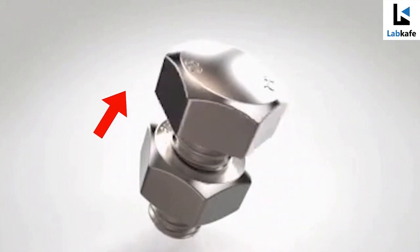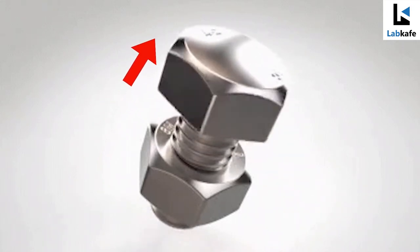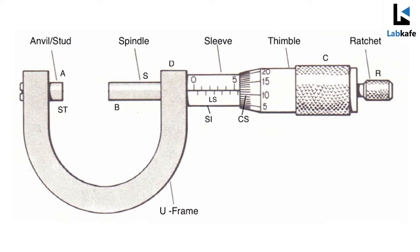When the screw is rotated in a nut, there is a linear motion in addition to the circular motion along its axis. A screw gauge has a screw S which advances forward or backward as one rotates the thimble C or head through the ratchet R. There is a linear scale LS attached to the limb D of the U-frame. The measurement of circular rotation of the screw is much easier than the linear distance, which is why there is a circular scale CS on the head of the thimble.